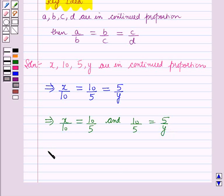Now this implies x is equal to 10 into 10 over 5 and y is equal to 5 into 5 over 10.